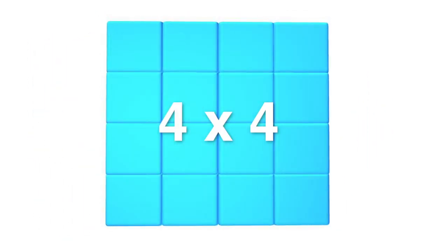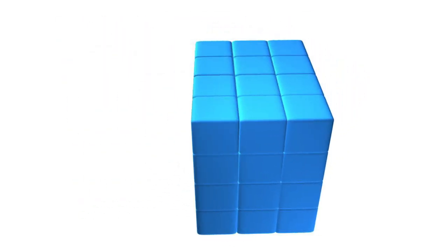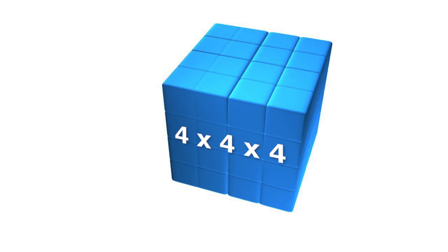The square of a number is a number multiplied by itself, which can be visualized as a square. The cube of a number is a number multiplied by itself twice, which can be visualized by a cube.